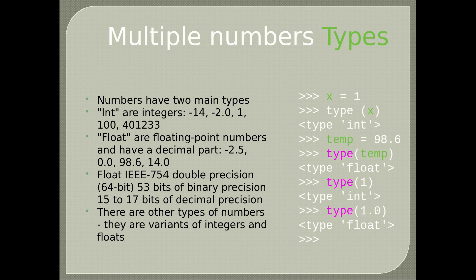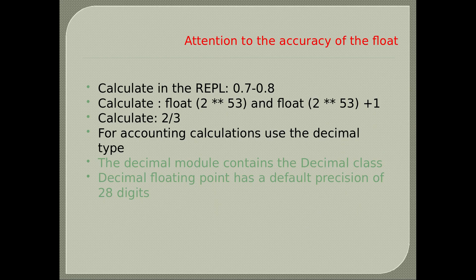There are other types of numbers — variants of integers and floats. For example, x = 1: type(x) gives integer. temp = 98.6: type(temp) gives float. Pay attention to the accuracy of the float. Calculate in the REPL: 0.7 - 0.8, and float(2**53) vs float(2**53) + 1, and 2/3. For accounting calculations, use the decimal type.